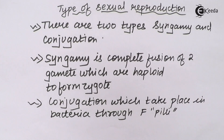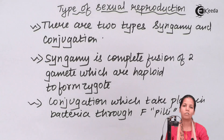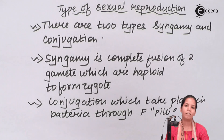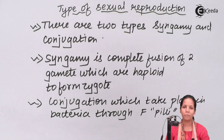So students, in this part of the chapter we came across two different pathways of sexual reproduction: syngamy and conjugation. I hope you all are very clear with this concept. Thank you!